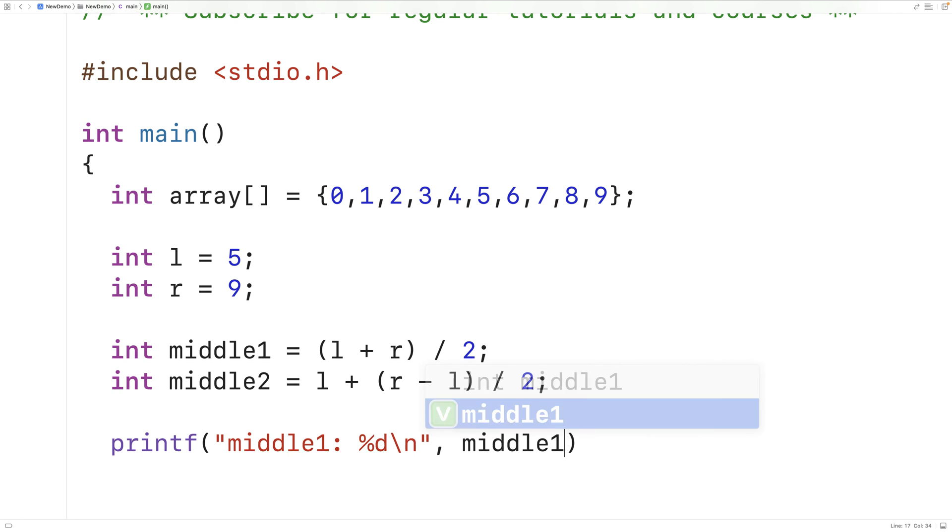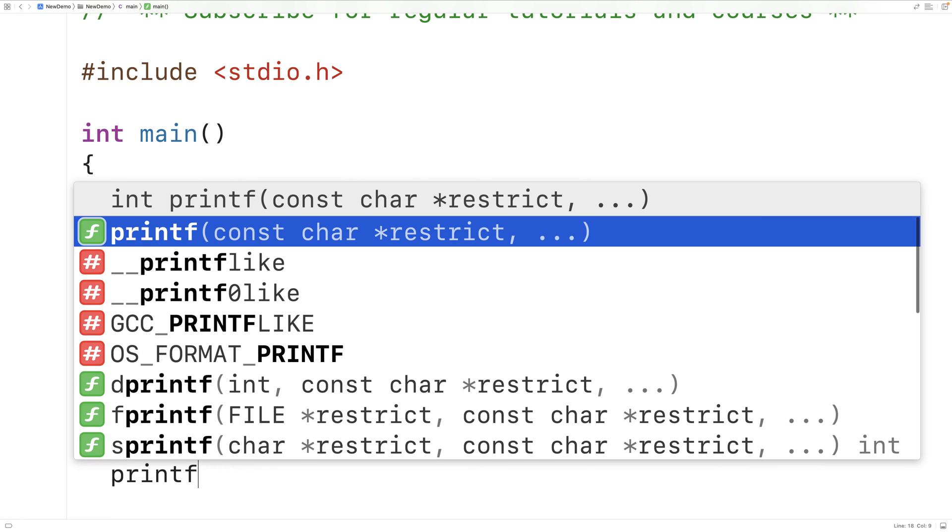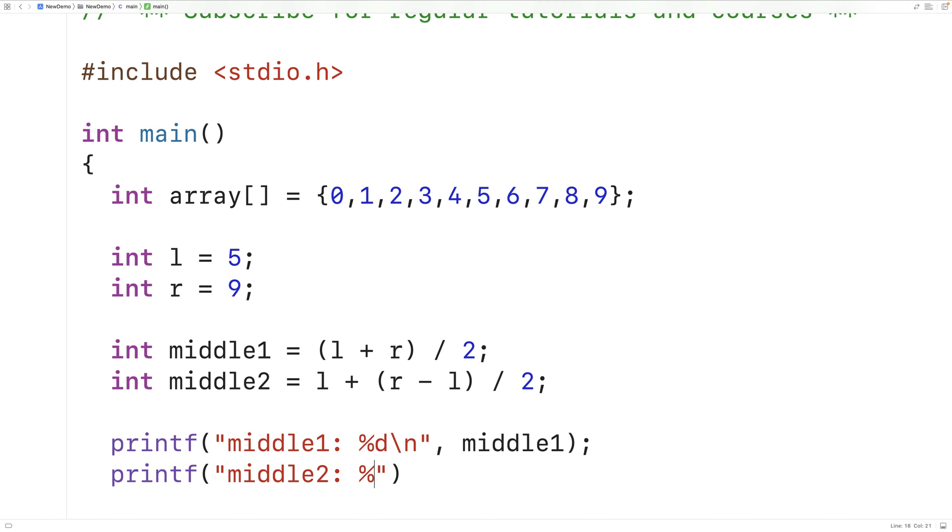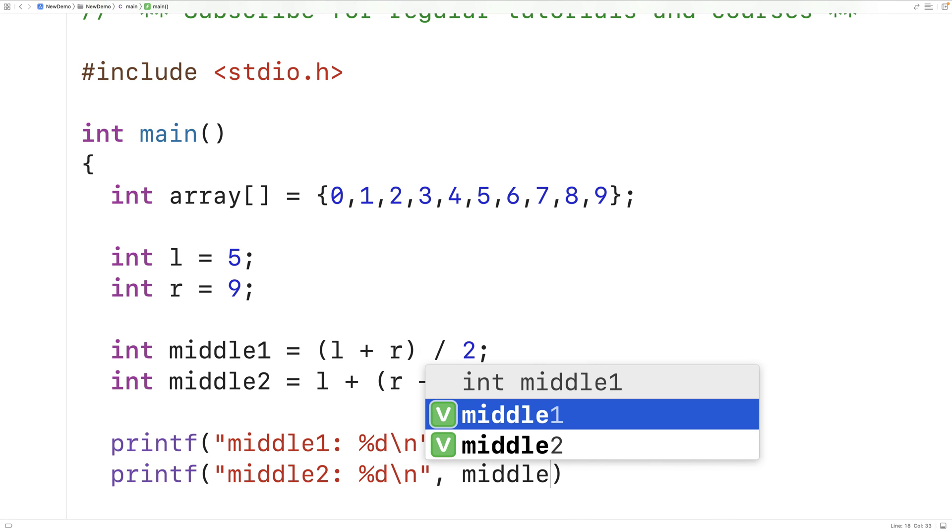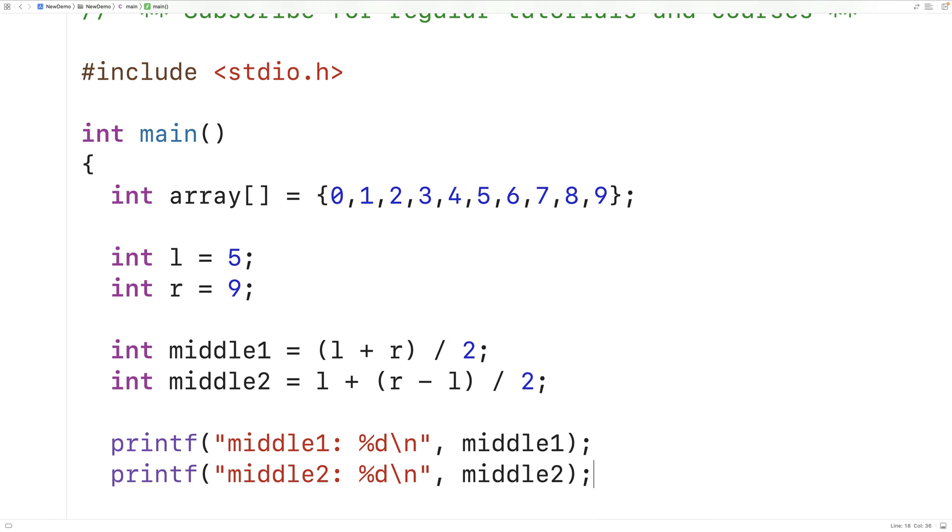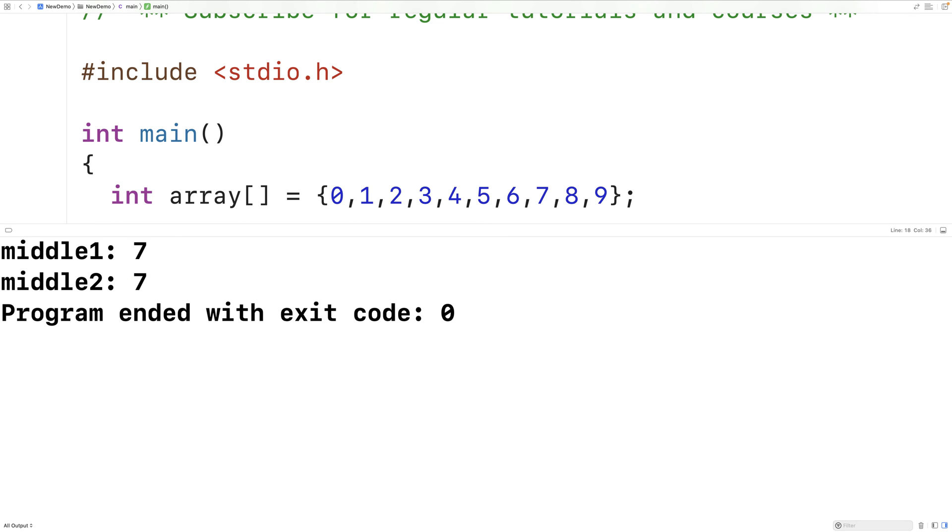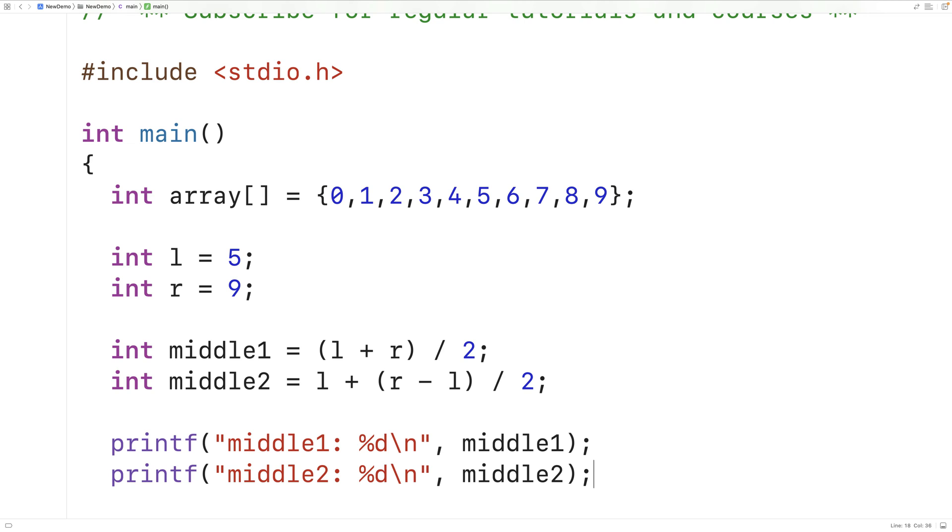So I'll have middle1 percent D and I'll put middle1, and then printf middle2 percent D backslash N and I'll put middle2. We can save, compile and run our program. And middle1 and middle2 are both seven. So both calculations are correct in terms of calculating the middle.